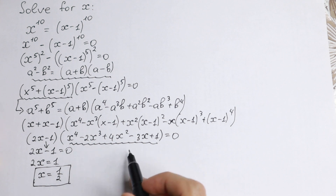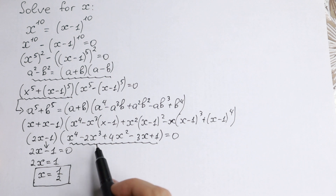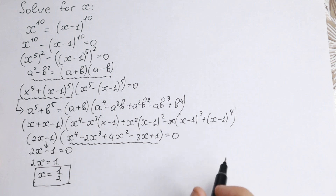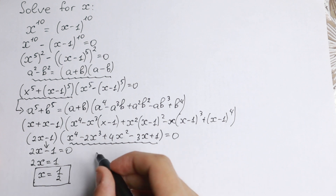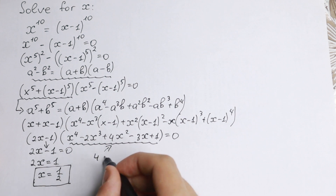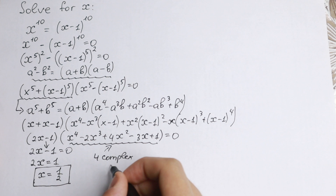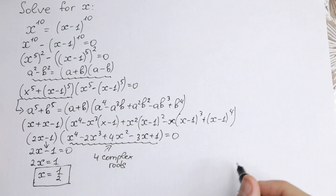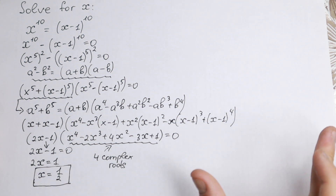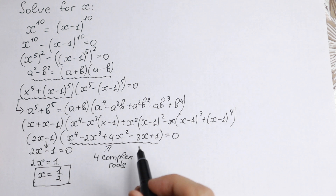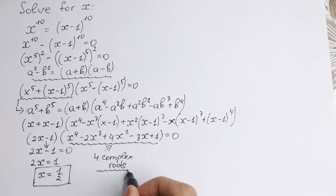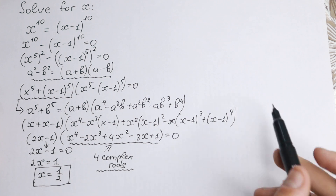Let's solve the quartic x to the fourth minus 2x cubed plus 4x squared minus 3x plus 1. I solved it beforehand and can tell you that it yields x equals one half as a root as well, plus four complex roots. So the first factor gives one real root and four complex roots.